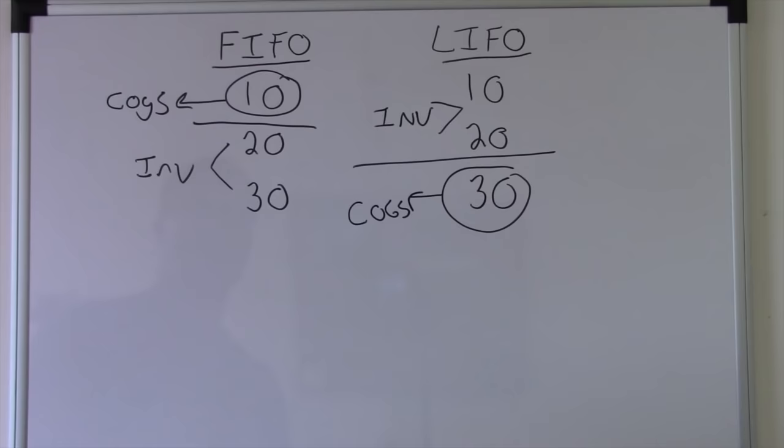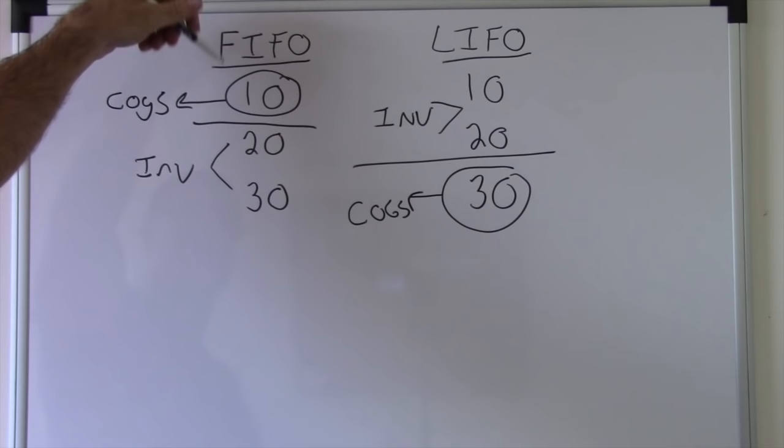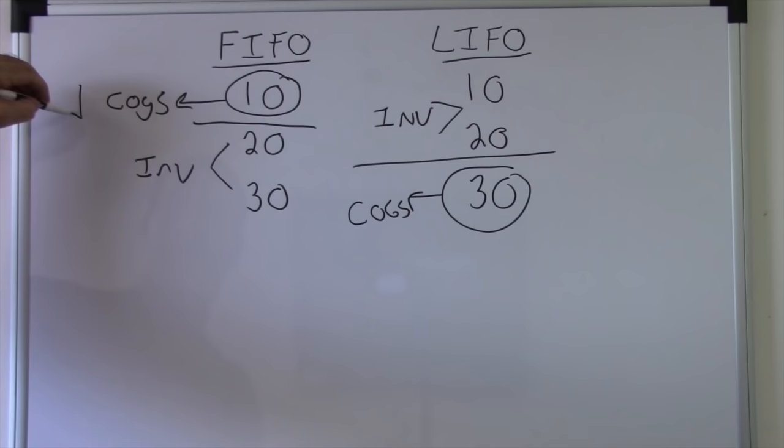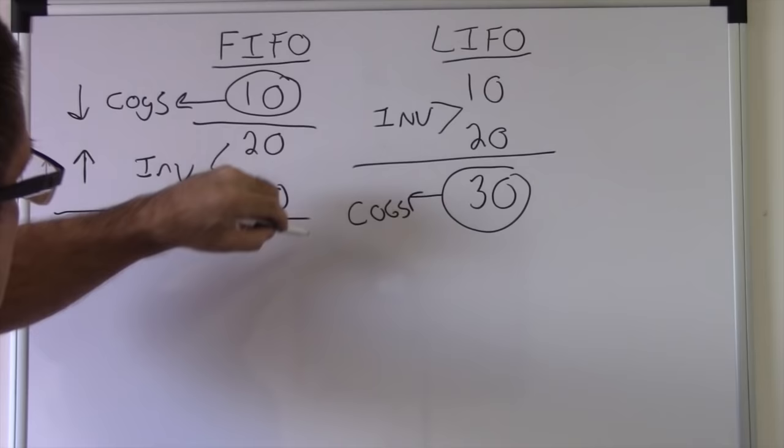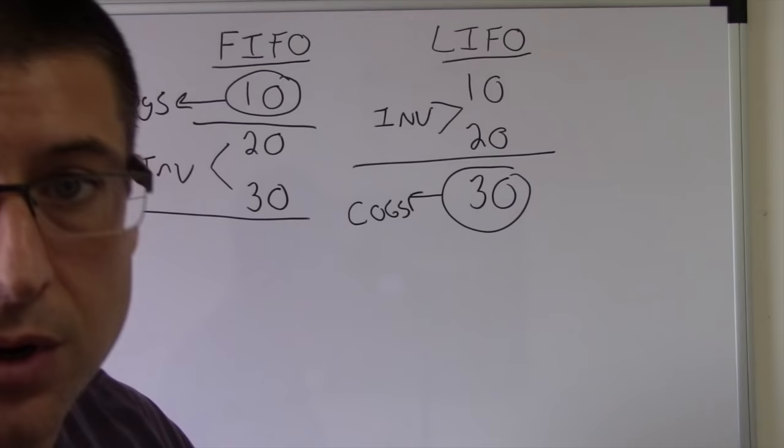If you do first in first out, your costs are going to be lower. Your inventory is going to be higher. Now what's that do to your income? If your costs are down, your income's up. They're inverse.